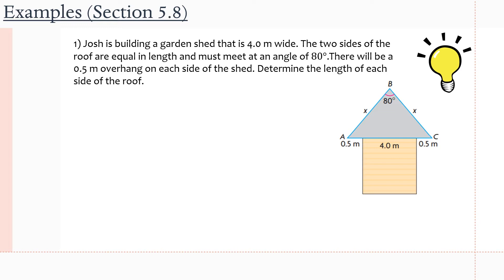Problem one says Josh is building a garden shed that is four meters wide. The shed is the square shown here. The two sides of the roof of the shed are equal in length and must meet at an angle of 80 degrees, so each side of the roof has length x. There will be a 0.5 meter overhang on each side of the shed — determine the length x of each side of the roof.